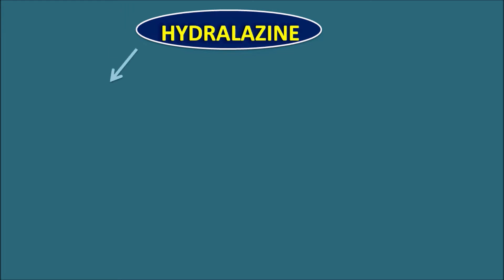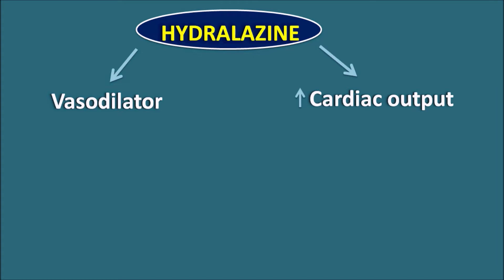Hi everyone. Today in this video let us discuss how hydralazine acts as a vasodilator. Hydralazine is a drug which acts as both a vasodilator and can also increase cardiac output. So these are two quite opposite actions — vasodilatory action results in decreased blood pressure, but at the same time this drug can increase the force of contraction.